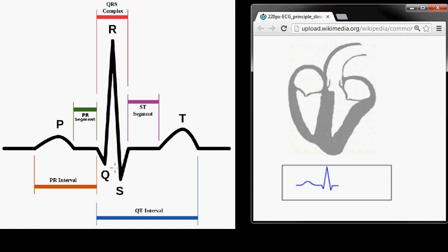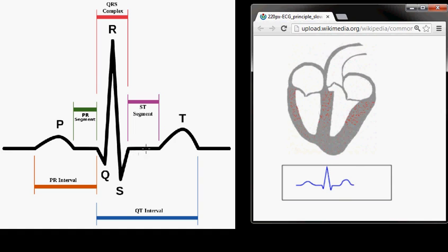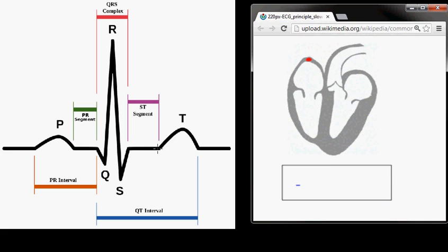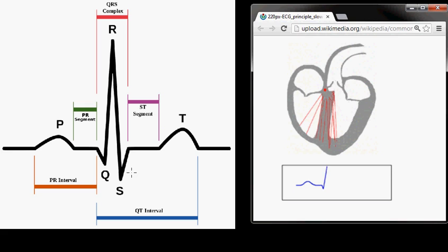Which represents the current for the ventricular contraction, and after the ventricular contraction, you have a brief pause, and you have repolarization of the ventricles, which happens in reverse order of depolarization, and that's represented by this T wave. And that PQRST represents all the waves of an EKG lead.